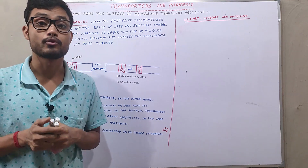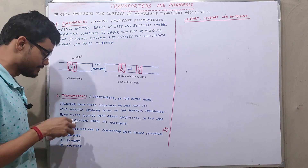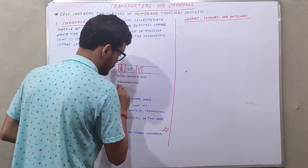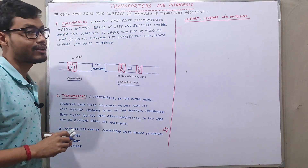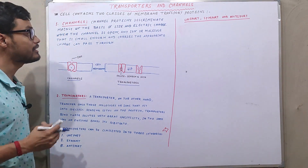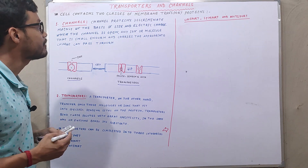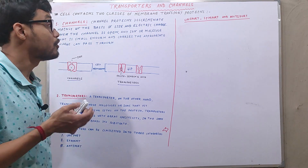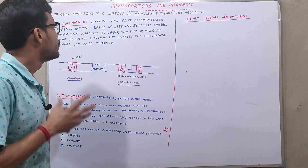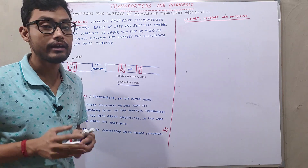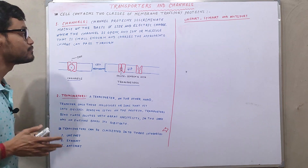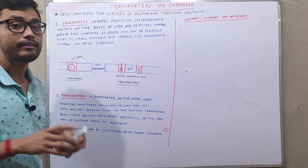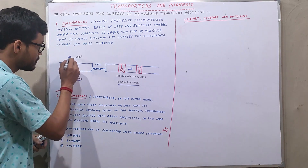The cell membrane consists of two types of transport proteins: one is classified as channel proteins and another as transporters. Channel proteins are proteins that discriminate mainly on the basis of size and the electric charges of the molecule. When the channel is open, any ion or molecule that is small enough and carries the appropriate charge can pass through.